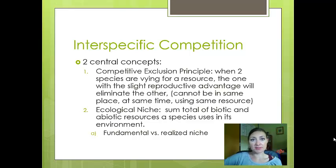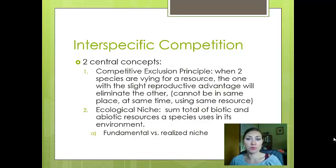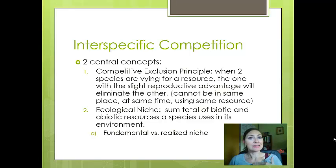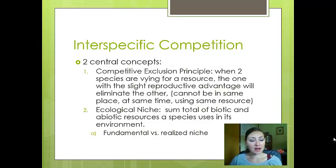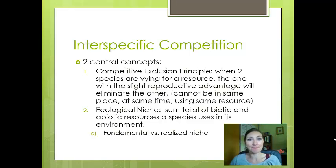There are two central concepts we can use to gauge interspecific competition. The first is the competitive exclusion principle: two species vying for the same resource — the one that is slightly more fit or has a slight reproductive advantage is going to eliminate the other. They cannot be in the same place at the same time going for the same resources; one of those three things has to be alleviated for them to not be in direct competition.